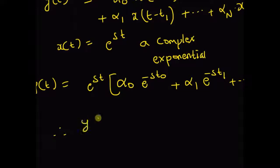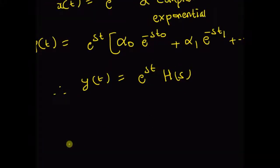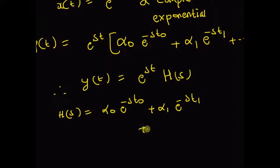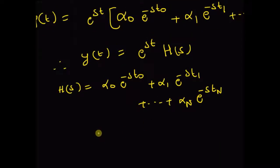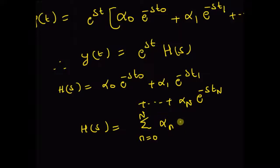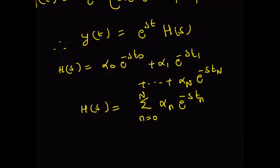Therefore, the output y(t) can be written as e^(st) multiplied by the transfer function H(s), where H(s) is written as the sum: α₀·e^(−st₀) + α₁·e^(−st₁) + … + αₙ·e^(−stₙ). That is, the delays in the individual channels become exponentials in the s-domain. H(s) can be written as a weighted sum of complex exponentials: the summation from n = 0 to N of αₙ·e^(−stₙ), where tₙ is the delay in the nth channel.